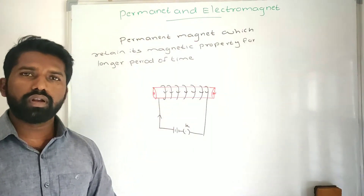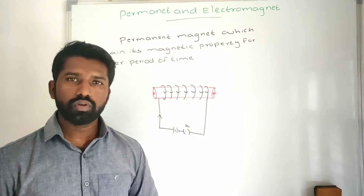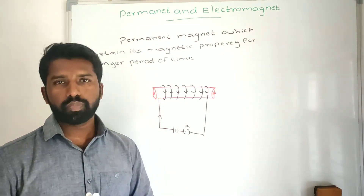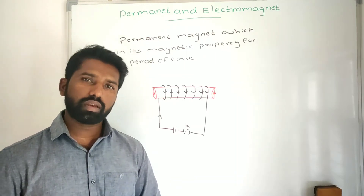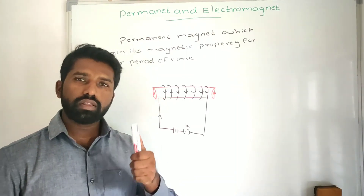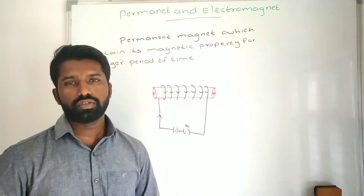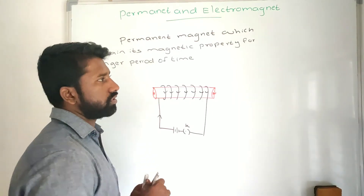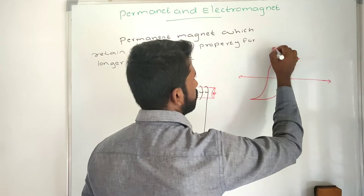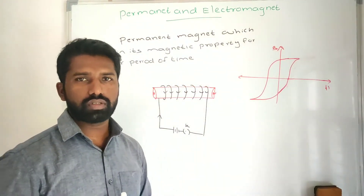When you take the ferromagnetic material out from the solenoid, it still retains its magnetic property. The material should retain its magnetic property in the absence of an external magnetic field. So the materials chosen for making permanent magnets must have high retentivity and high coercivity.